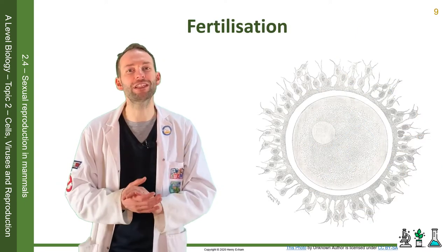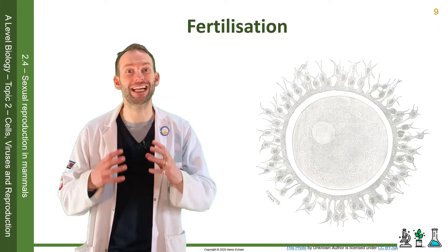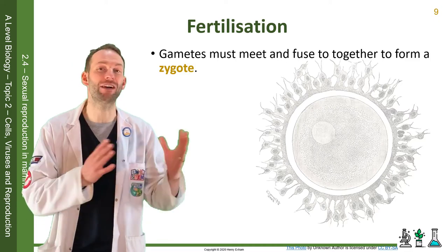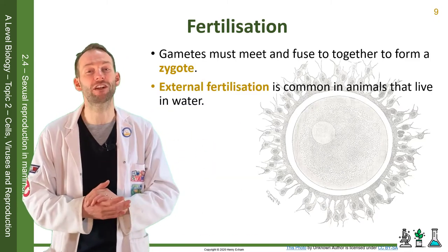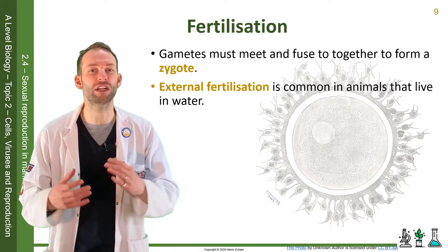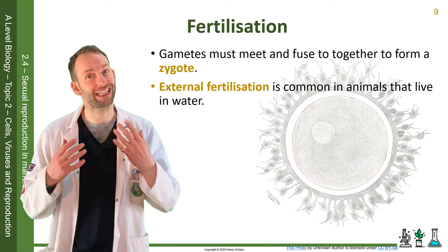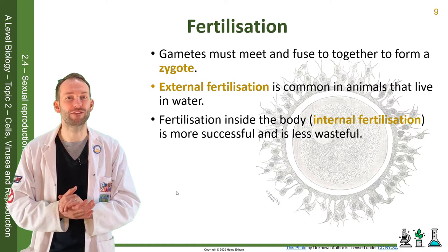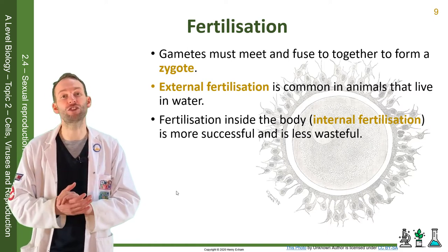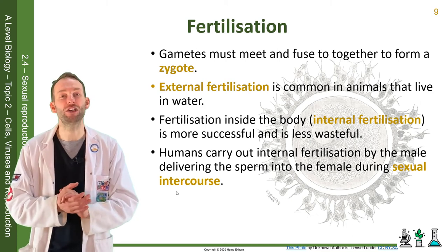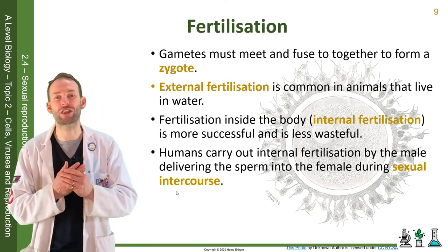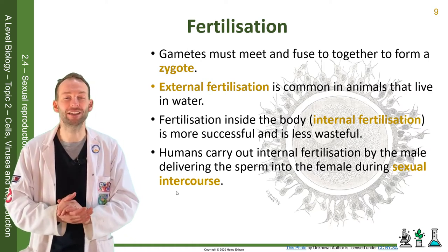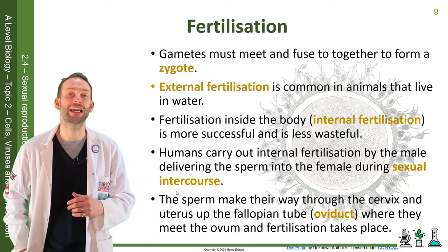For fertilization, in order for an organism to sexually reproduce, the gametes must meet and fuse together to form a zygote. In some animals, this happens outside the body — that's external fertilization, very common in animals that live in water. You can also have fertilization inside the body — internal fertilization — which tends to be more successful and less wasteful. Humans carry out internal fertilization by the male delivering sperm into the female during sexual intercourse. The sperm make their way through the cervix and the uterus up the fallopian tube, the oviduct, where they meet the oocyte and fertilization takes place.